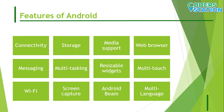The second feature is storage — SQLite, a lightweight relational database, is used for data storage purposes. The third feature is media support. Android supports various audio, video, and still media formats including H.263, H.264, MPEG-4, SP, AMR, AMR-WB, AAC, HE-AAC, AAC 5.1, MP3, MIDI, OGG, JPEG, WAV, JPG, PNG, GIF, BMP, and WEBP.